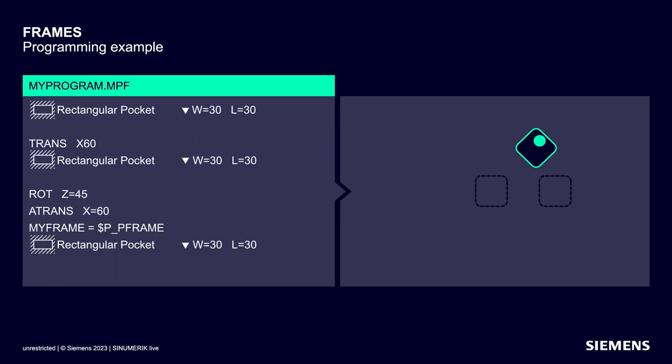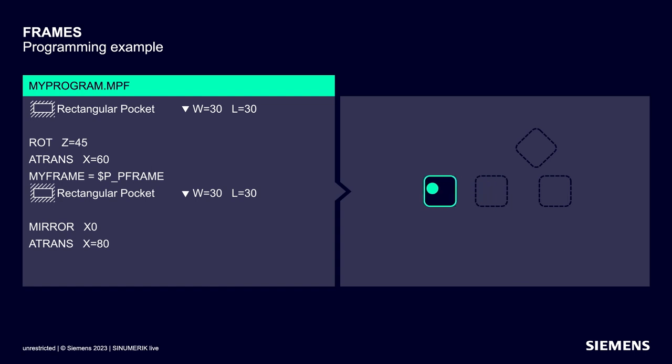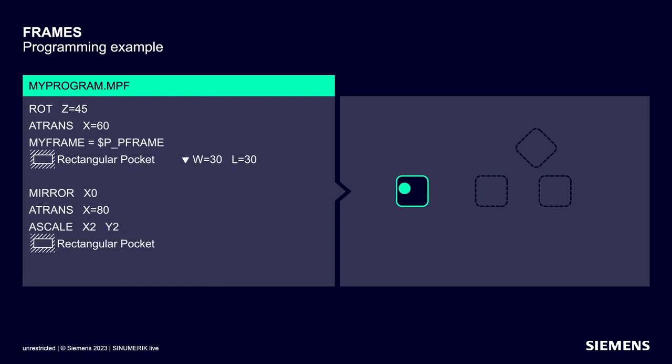For this purpose, the system variable $P_PFRAME is read out and the content is written to the user variable. Now we want to mirror the rectangular pocket — but you have to be careful here. Mirroring is not performed around the X axis; rather the X values are mirrored around the Y axis. That's a bit quirky, so it's worth keeping in mind. An additive shift and another additive scaling follow, each by a factor of 2 in X and Y. When scaling with the scale command, only the geometric size of the rectangular pocket is changed — parameters such as tool, milling path overlap and so on must be adjusted manually.